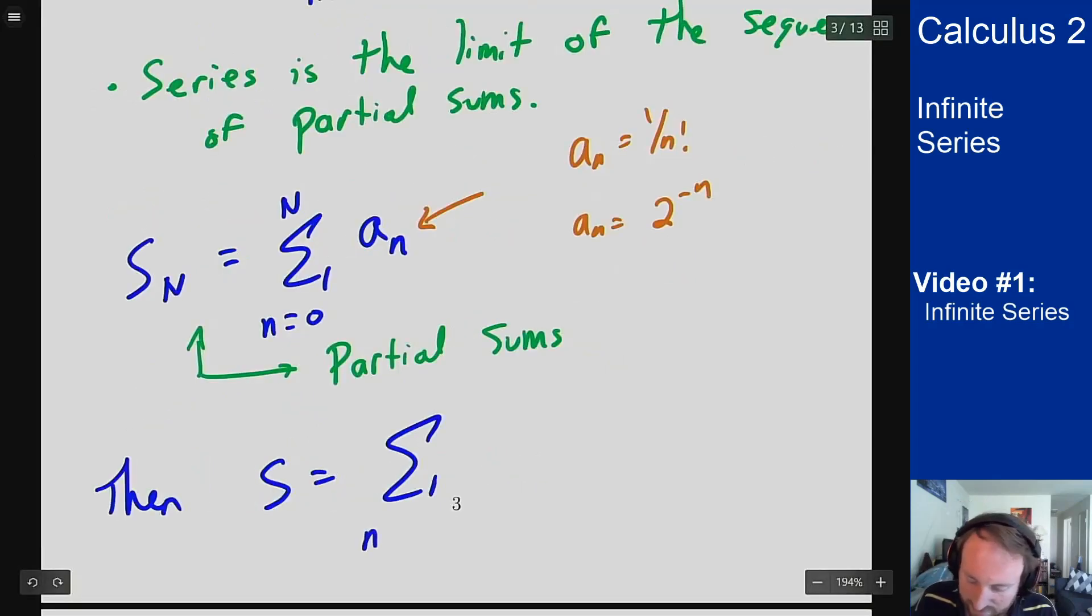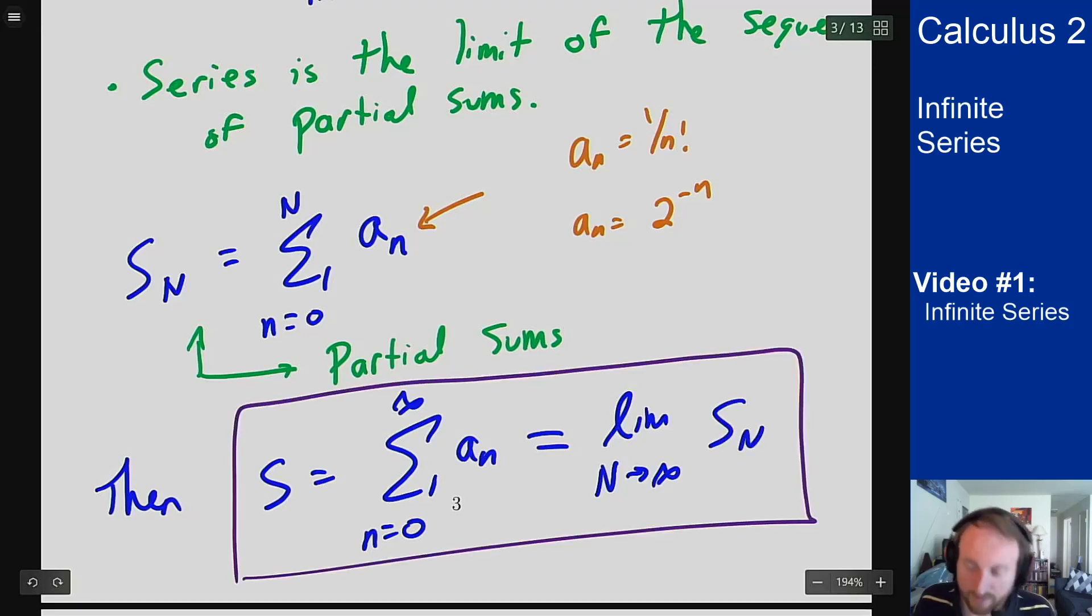And then to get the actual series, I take the limit of the partial sums. Then S, which is the sum of the entire series, is defined to be the limit as my upper endpoint goes to infinity of these partial sums. That's why we generally talk about these series. They are the limit of partial sums, and the only way you can actually find what series are, and what they evaluate to, is by looking at the partial sums and taking the limit.